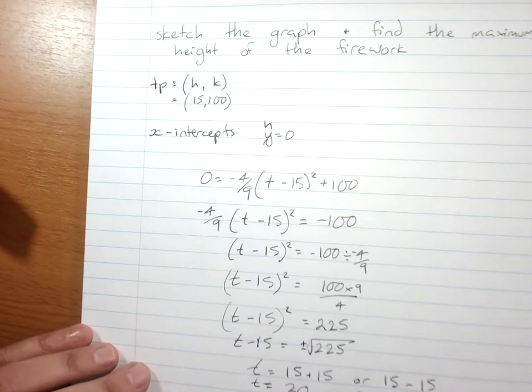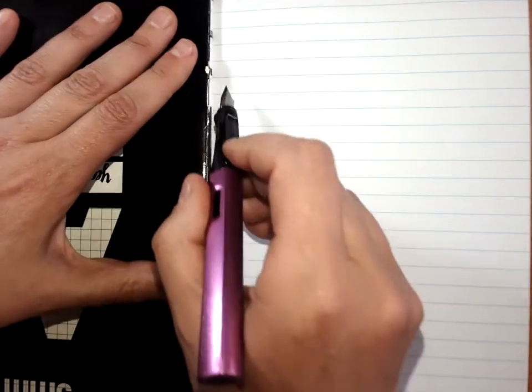Now I've got the x-intercepts and the turning point. All I need to do is sketch my parabola. Ideally you'd have a ruler, but I have a workbook.